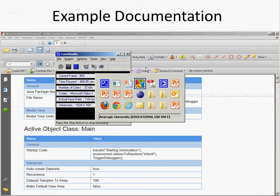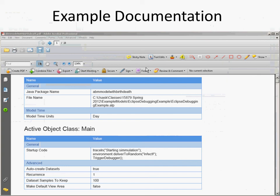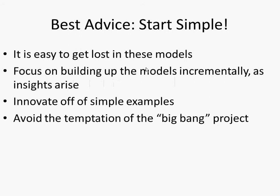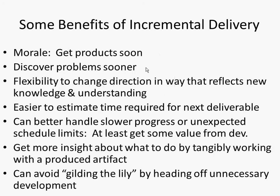I'll talk about a couple of these principles. One that was alluded to earlier is incremental delivery. It's easy to get lost in these models — focus on building them up incrementally. Innovate off of simple examples and avoid creating a big bang. Don't shoot for the big final model only. There are lots of benefits for incremental delivery: you get product soon, you get morale, you discover problems sooner, you get insights on where you want to go, and you can better estimate the time required to add additional features.